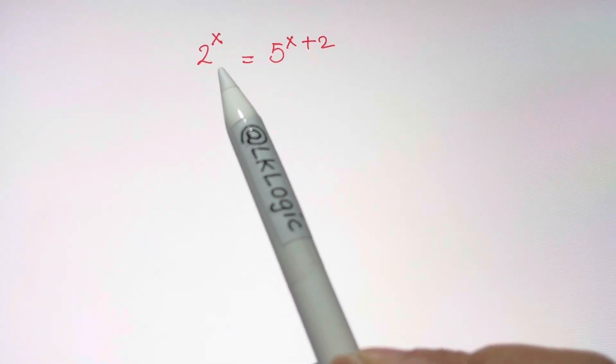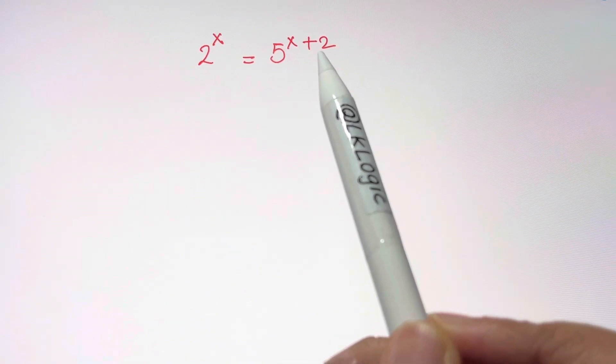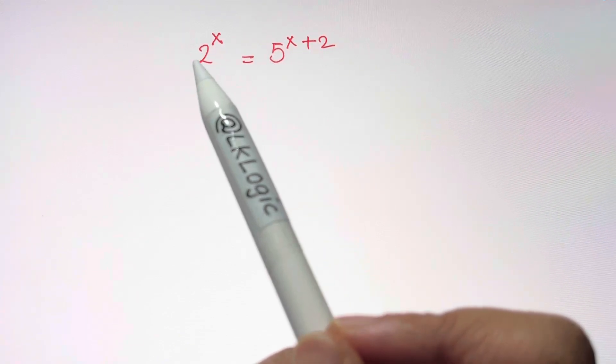Hi guys, we have a nice exponential equation here: 2^x = 5^(x+2). Now what we're going to do is the first step: we are going to bring exponents at one side.